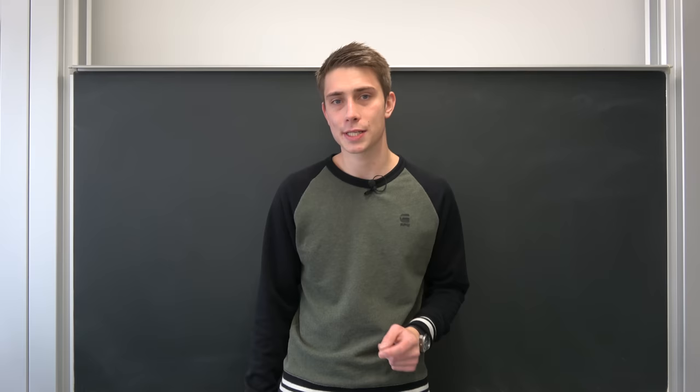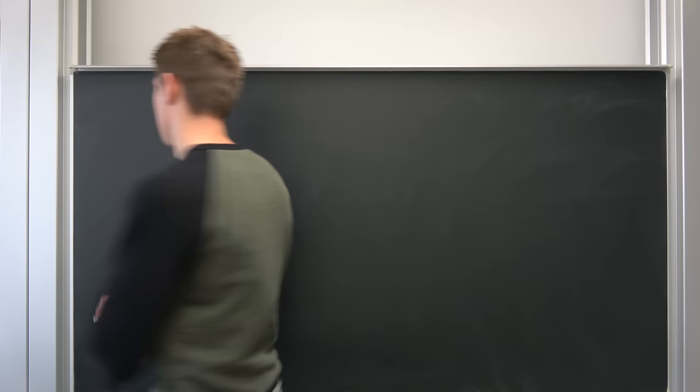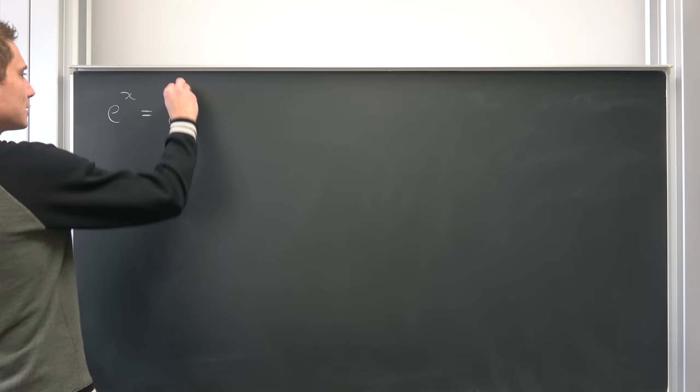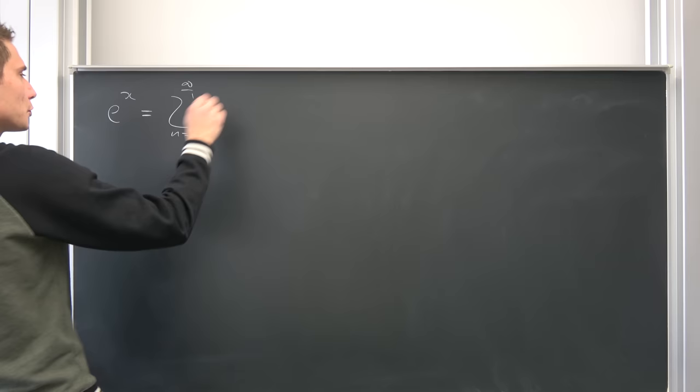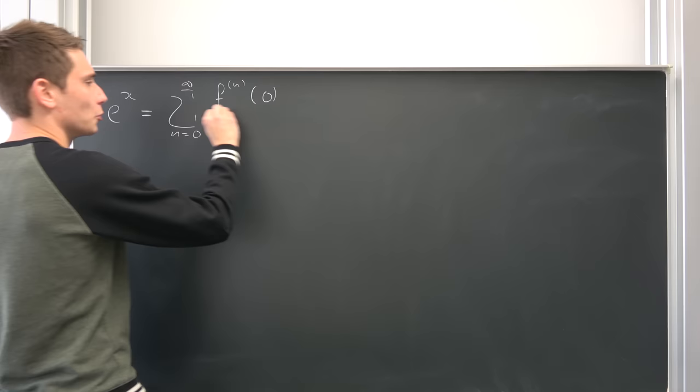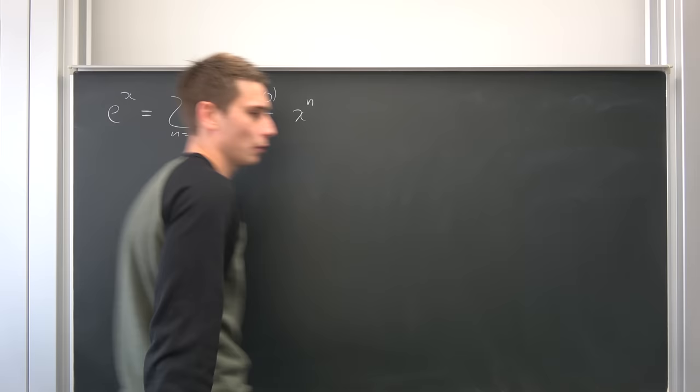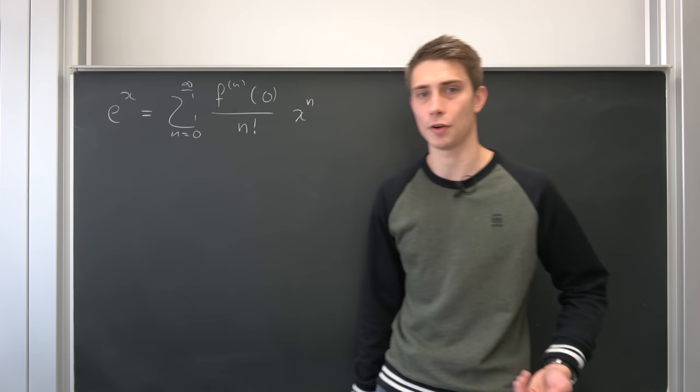So we want to find out the Maclaurin series expansion of e to the x. Let's write out what we have. We want to represent e to the x as an infinite sum running from zero to infinity of the nth derivative of this function at the point zero over n factorial times x to the nth power, where our f is just the exponential function of x.